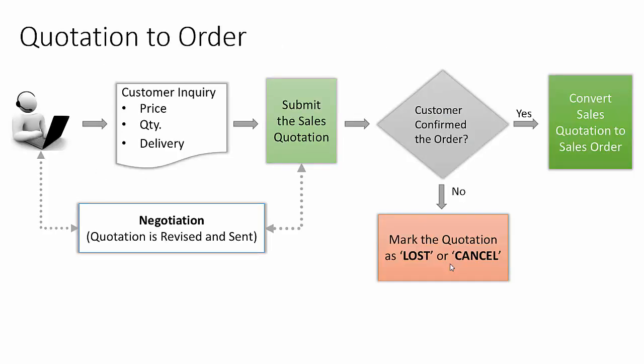Often a customer inquires about the product, price, and quantity, especially when dealing with a new vendor or new product. In response to the customer inquiry, the vendor sends a quotation with the required information. This process may undergo several rounds of negotiation before finalizing the order. For example, the customer may negotiate for better pricing by asking about discounts or speedy delivery. If the customer is satisfied and happy with the quotation, they may confirm the order with the vendor.